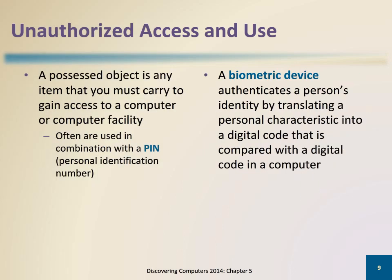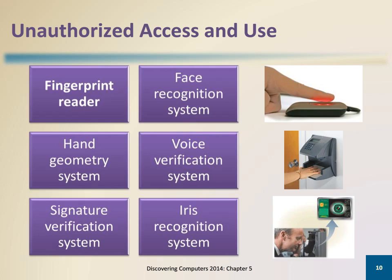Other ways to control computer access is through the use of a possessed object or a biometric device. Examples of biometric devices include fingerprint readers, face recognition systems, hand geometry systems, voice verification systems, signature verification systems, and iris recognition systems.